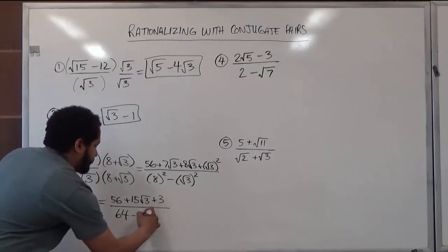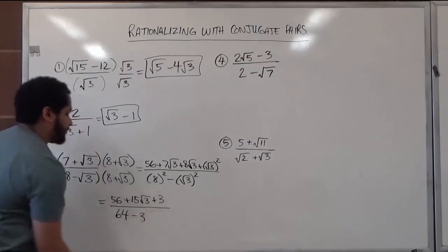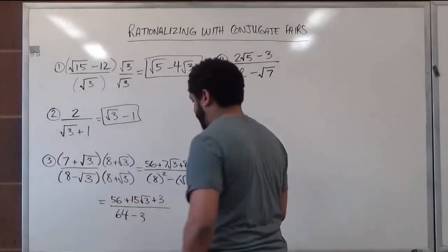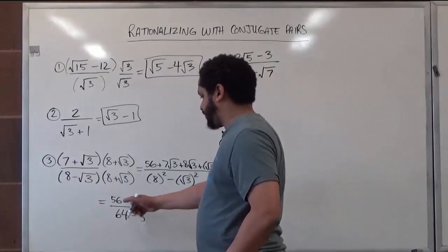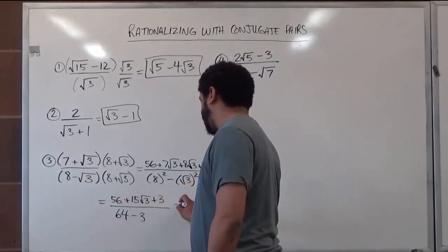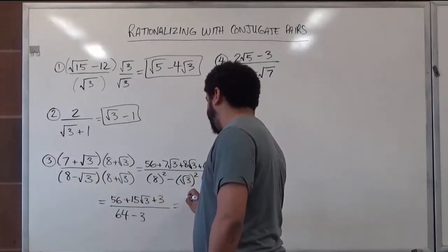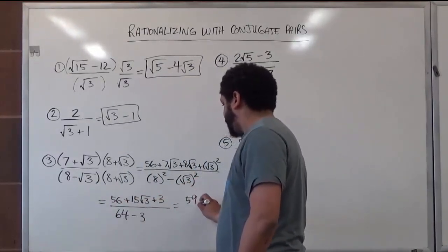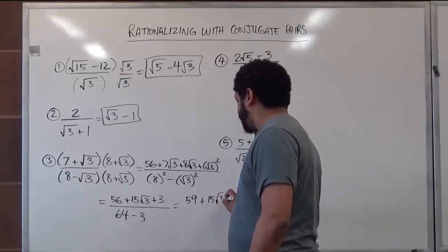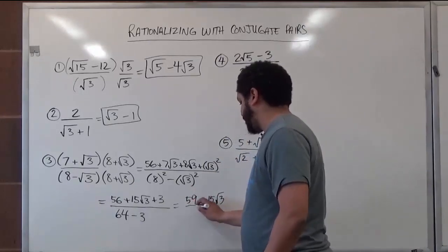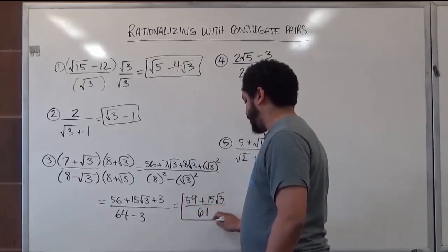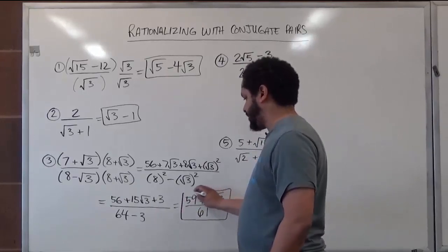Take away positive 3. We continue simplifying: 56 plus 3 is 59, and we have positive 15 radical 3's on top. On the denominator side, we have just 61. And here's our complete rationalization.